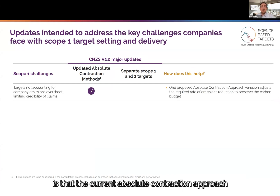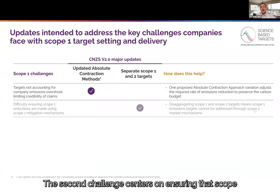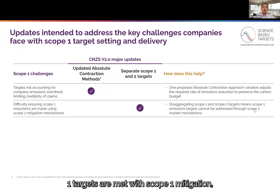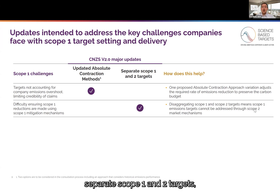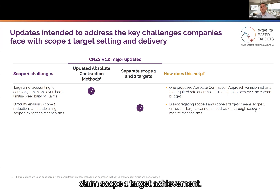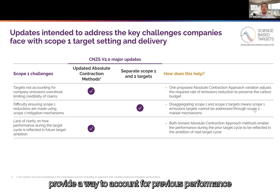The first of these challenges is that the current absolute contraction approach doesn't account well for emissions overshoot across the target period. The updated absolute contraction approach being proposed focuses on the conservation of the underlying carbon budget. The second challenge centers on ensuring that Scope 1 targets are met with Scope 1 mitigation, which is often not the case when companies establish combined Scope 1 and 2 targets. The standard now requires separate Scope 1 and 2 targets, meaning that potentially easier Scope 2 mitigations cannot be used to claim Scope 1 target achievement. The third challenge is on providing greater clarity around how performance against previous targets impacts future target setting. The updated method proposals provide a way to account for previous performance during the target renewal process.